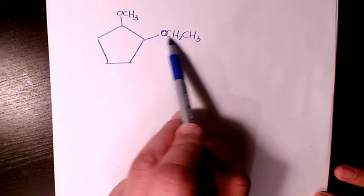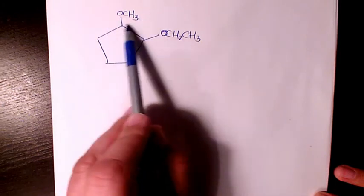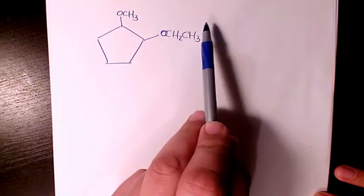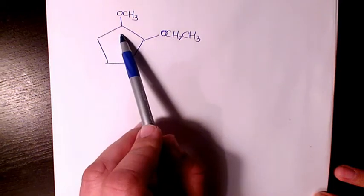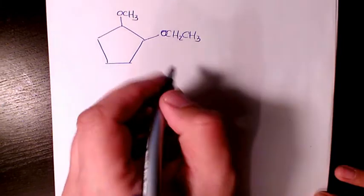And this oxygen connects to an ethyl group, so we have one of them is going to be methoxy, this is going to be ethoxy. And here we have cyclopentane because we have five carbon atoms, so I'm gonna call it